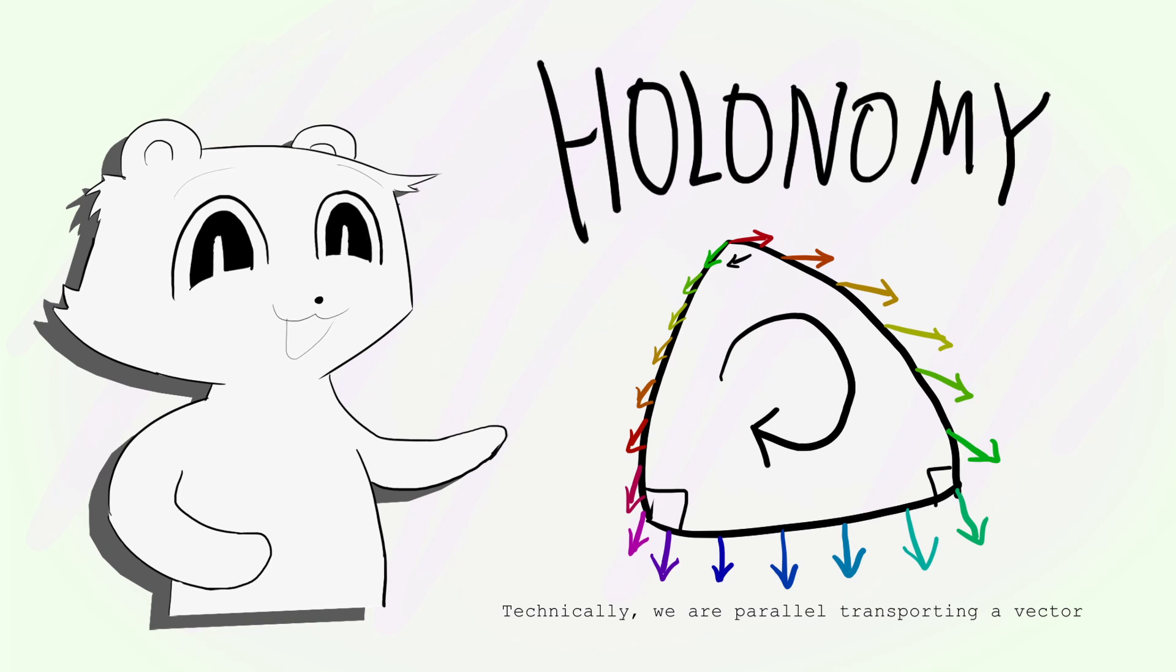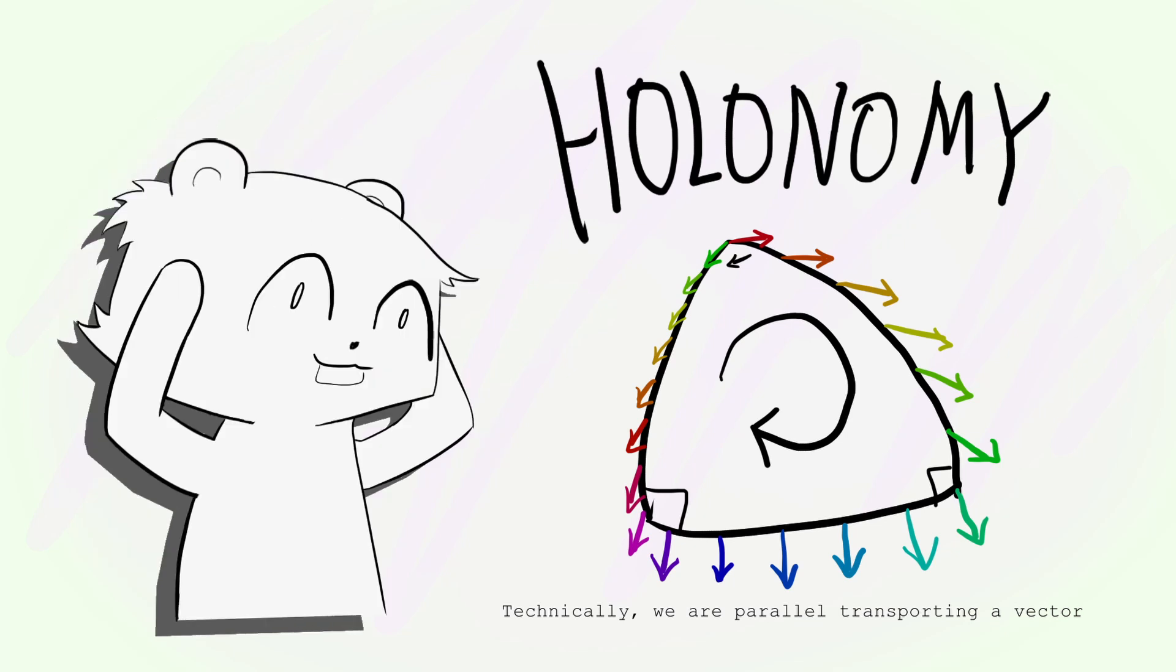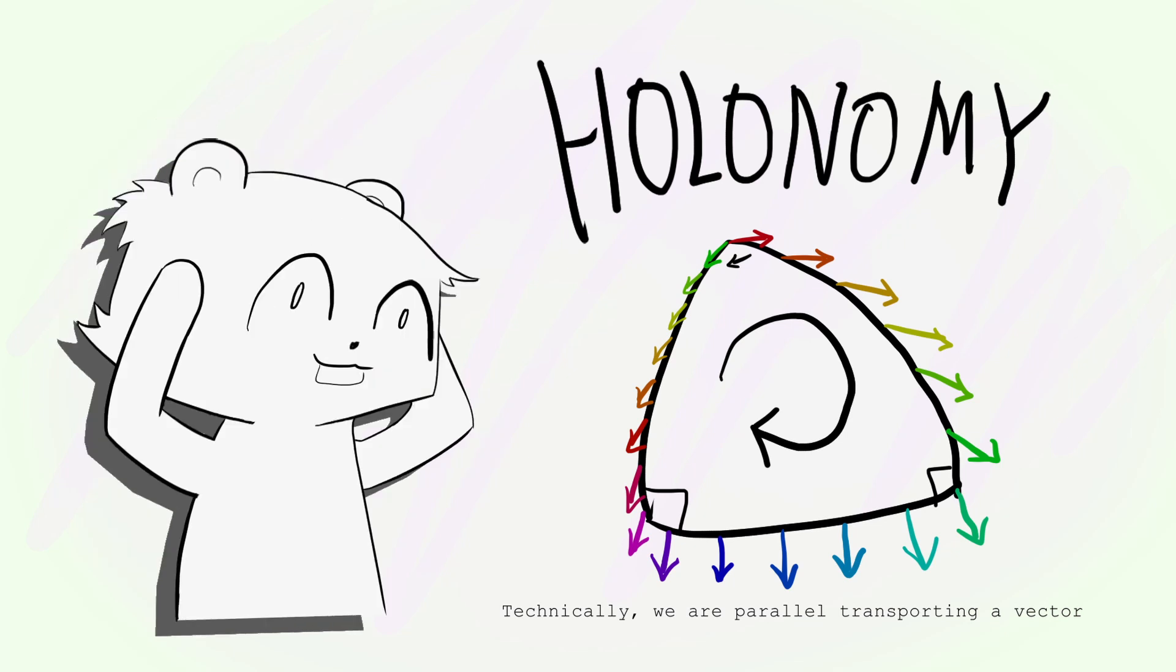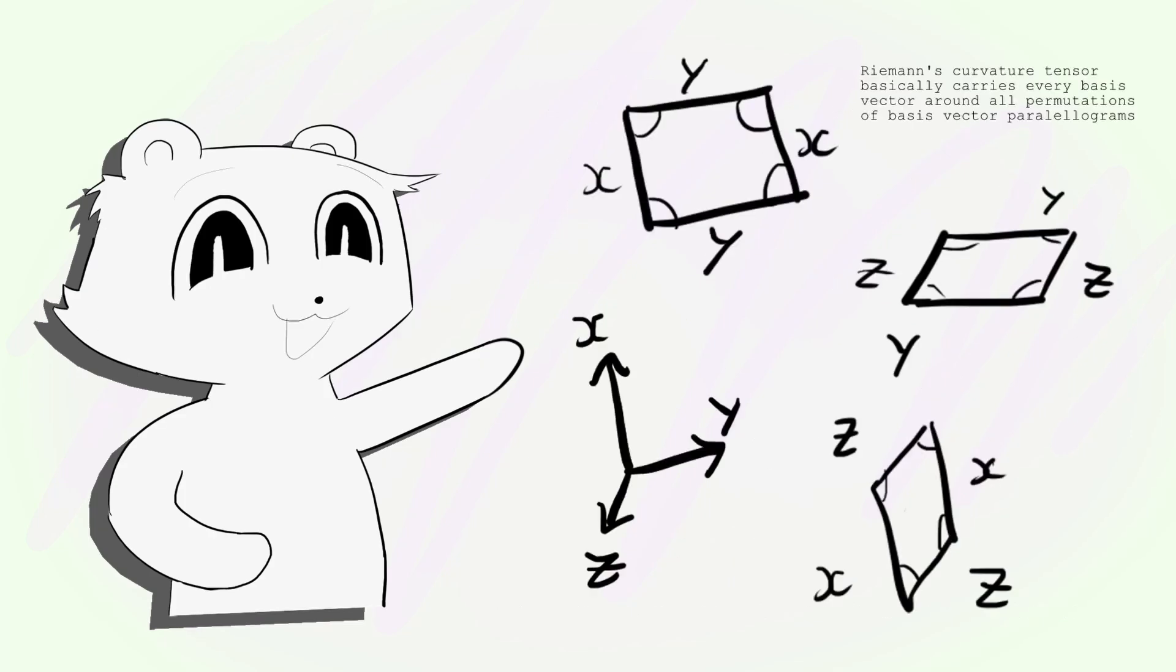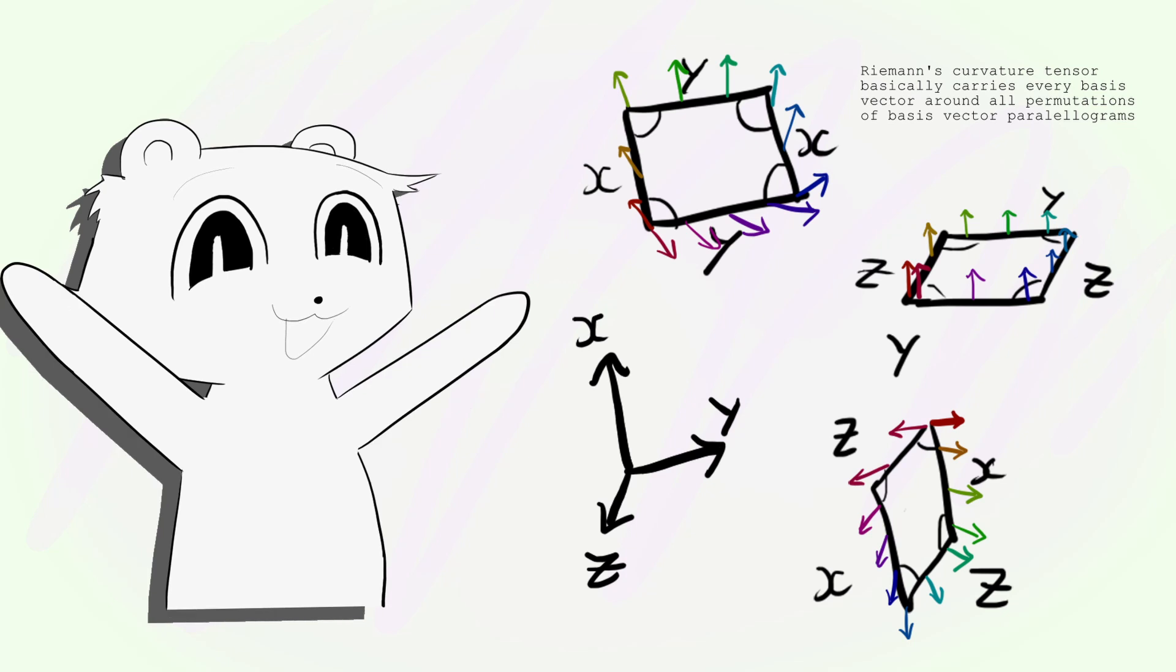This technique is called holonomy, and oh my god, it is so powerful. Just by making a parallelogram out of every pair of directions along a surface and dragging a vector along it, we get the curvature in every single direction.